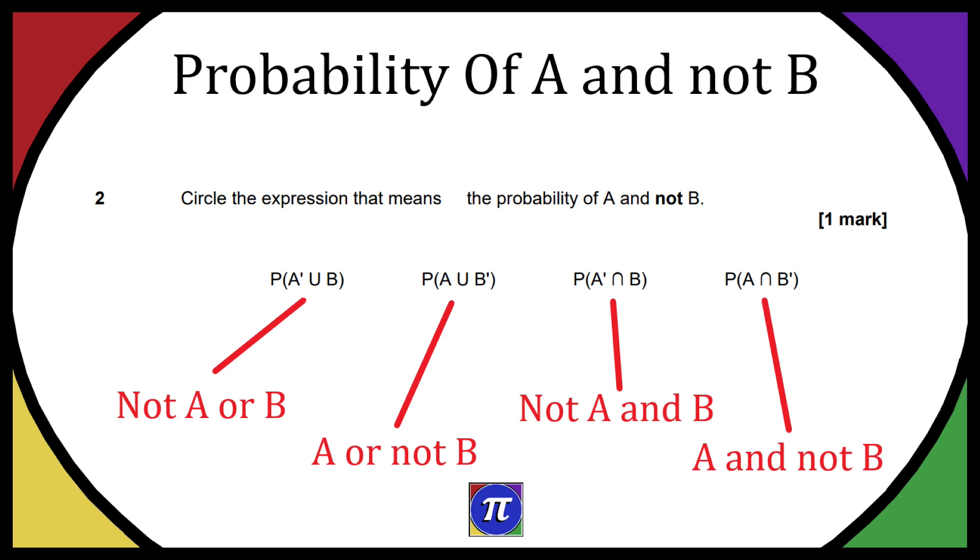Finally we have the probability of A and not B. Hopefully that makes sense based on the three examples I did before. So A and not B. That is going to be our final answer. It's the one on the far right.